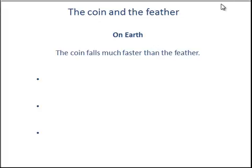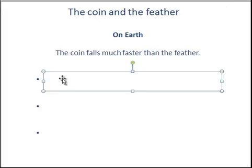In this video we are going to be looking at the example of coins and feathers and why there are differences in the time it takes them to fall to the ground. As we all know, on earth if you drop a coin it falls much faster than the feather and hits the ground much sooner. But we have to think about why this occurs.